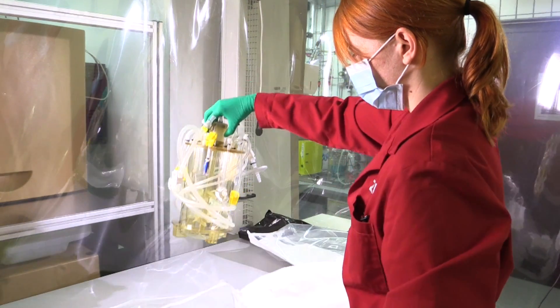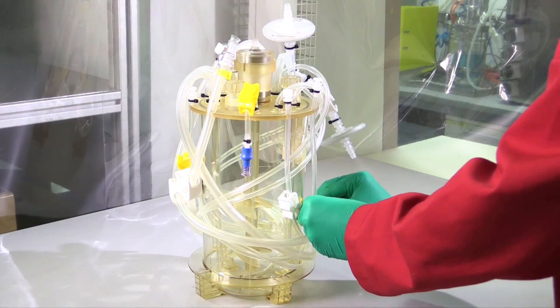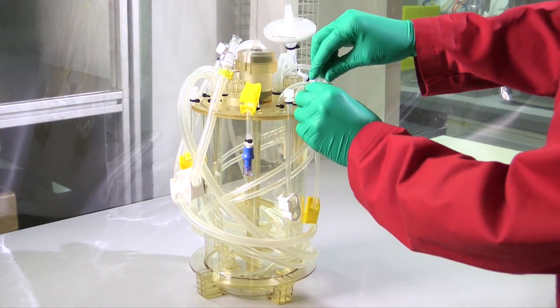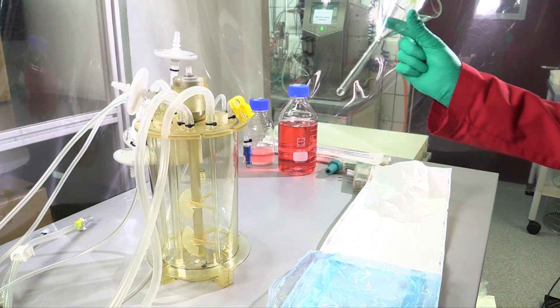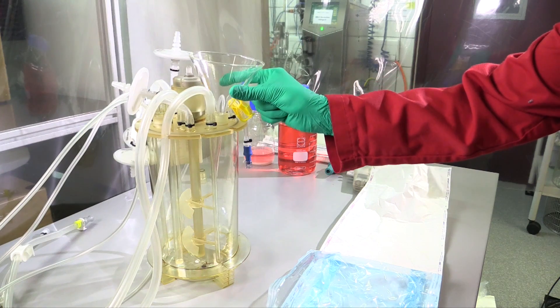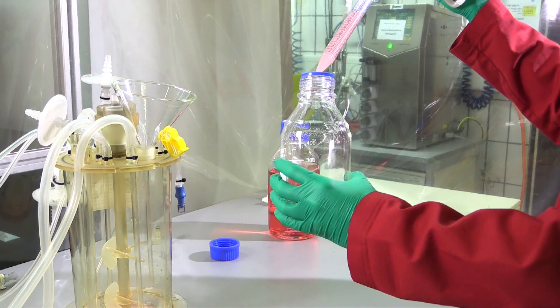After removing the univessel from the bag, all clamps are closed and the components are checked visually for damage or loose parts. Now a sterile funnel is inserted into a free sensor port and the bioreactor can be filled with the prepared microcarriers.